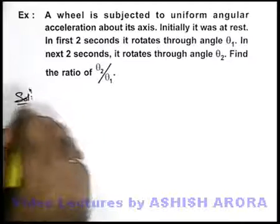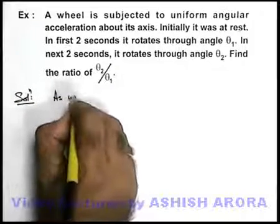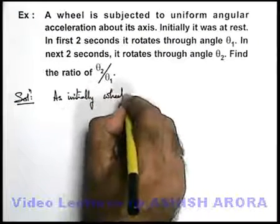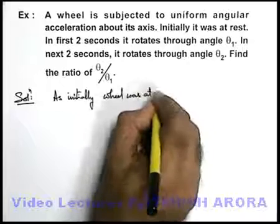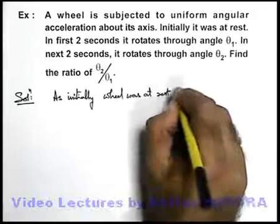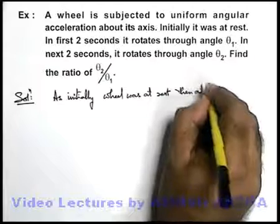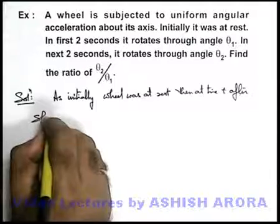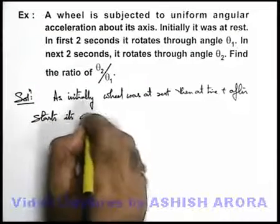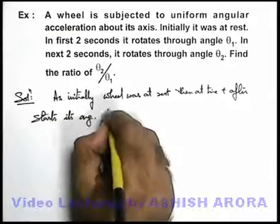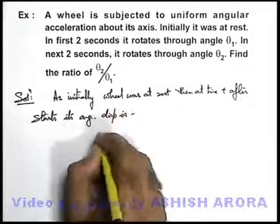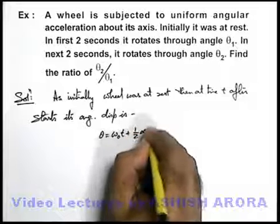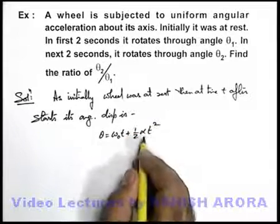As the wheel was initially at rest, then at time t after start, its angular displacement can be given as theta equals omega knot t plus half alpha t square. This is the angular displacement equation.